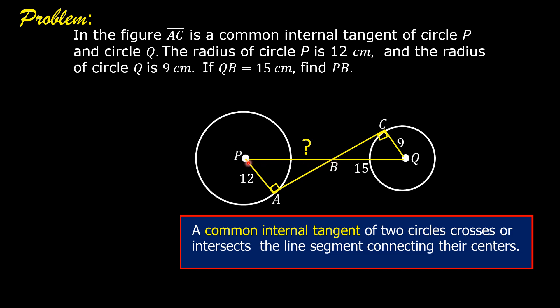Angle PAB is a right angle. Therefore, they are congruent. Two right angles are always congruent.